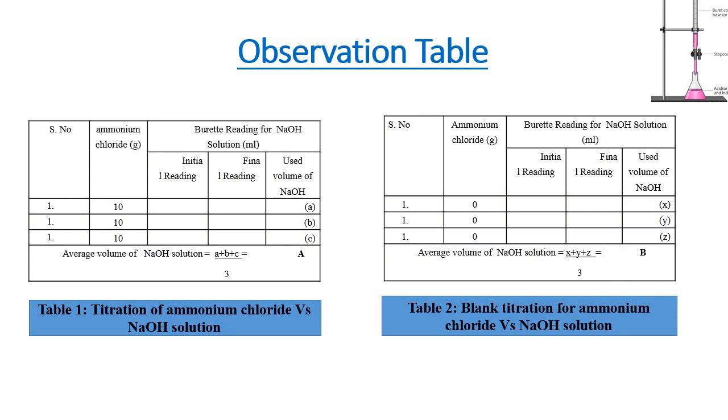Coming to the observation table, we have to prepare two observation tables. The first is for titration of ammonium chloride versus NaOH solution and the second is the blank titration for ammonium chloride versus NaOH solution. We perform blank titration to minimize the error.